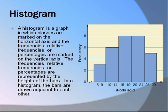A histogram is a graph in which classes are marked on the horizontal axis and the frequencies, relative frequencies, or percentages are marked on the vertical axis. The frequencies, relative frequencies, or percentages are represented by the heights of the bars. In a histogram the bars are drawn adjacent to each other.